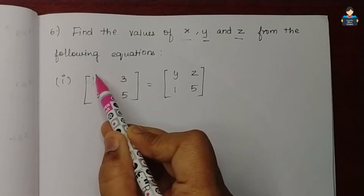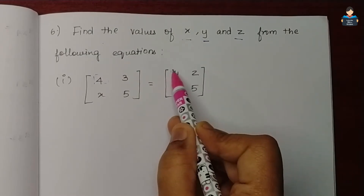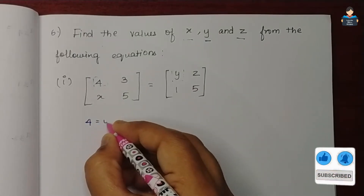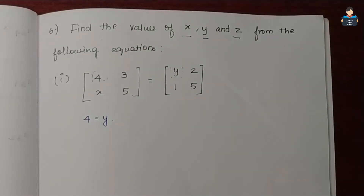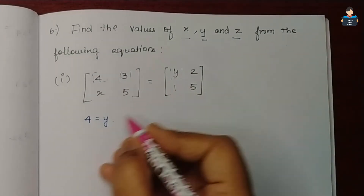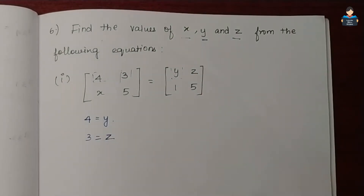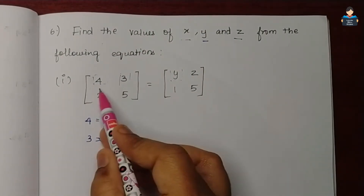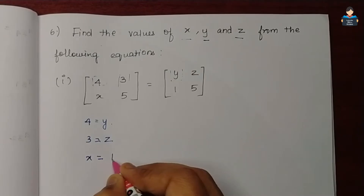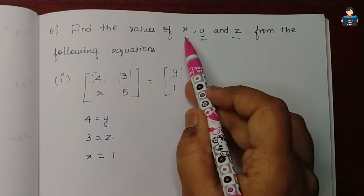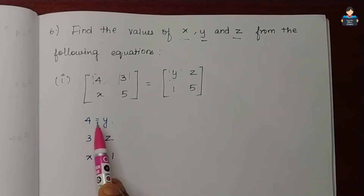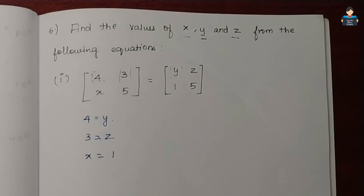In the first subdivision, for position a11 we have 4 equal to y, and for position a12 we have 3 equal to z. Since the two matrices are equal, their elements are equal, so x is equal to 1. The values asked are x, y and z: x equals 1, y equals 4, and z equals 3.